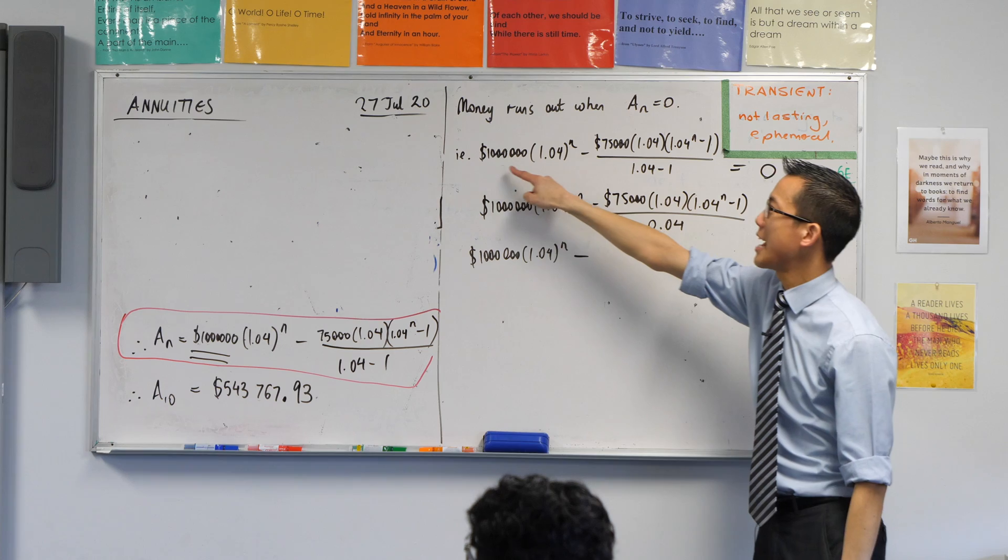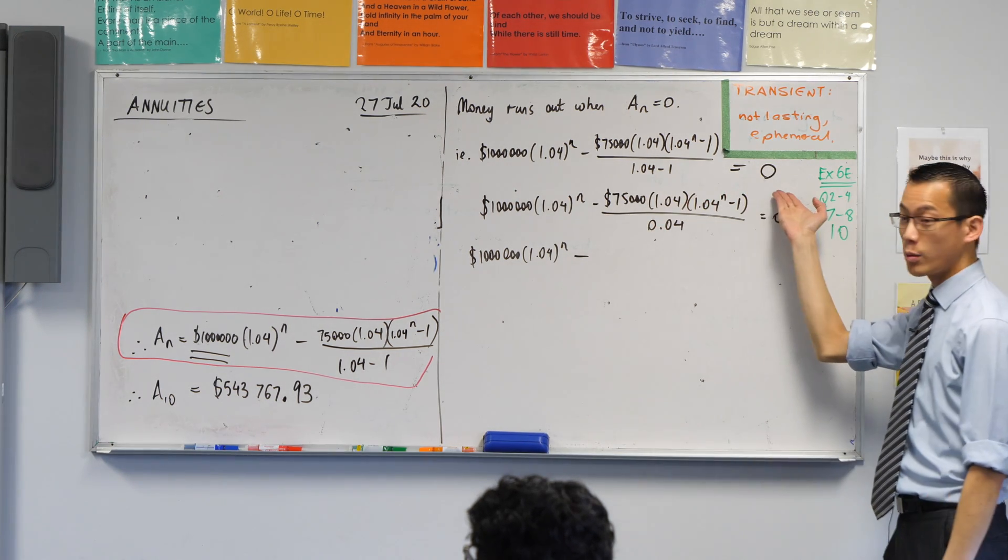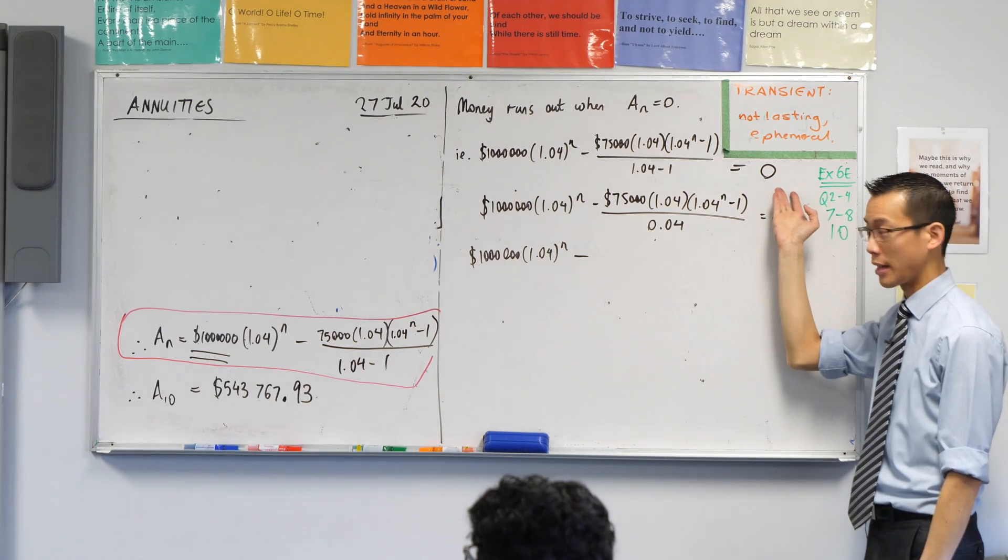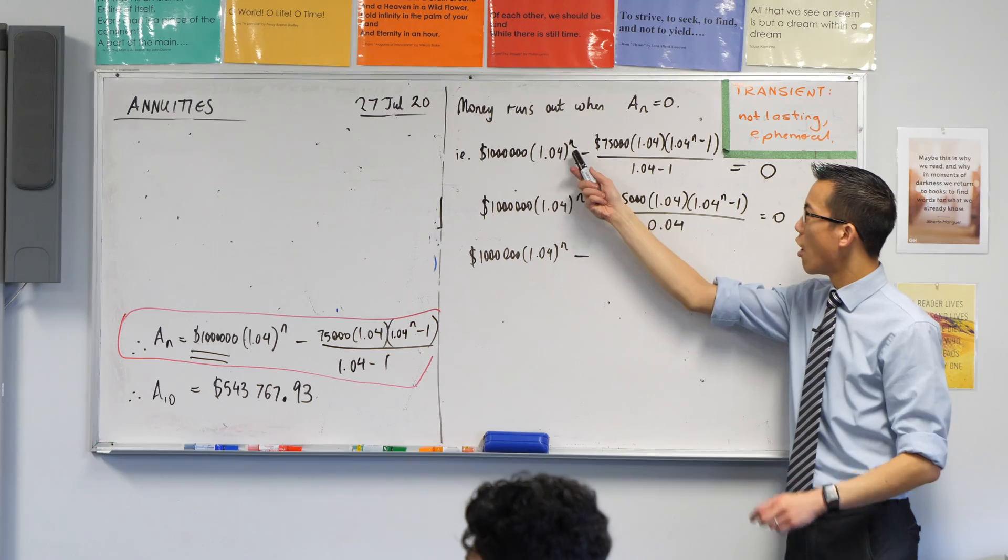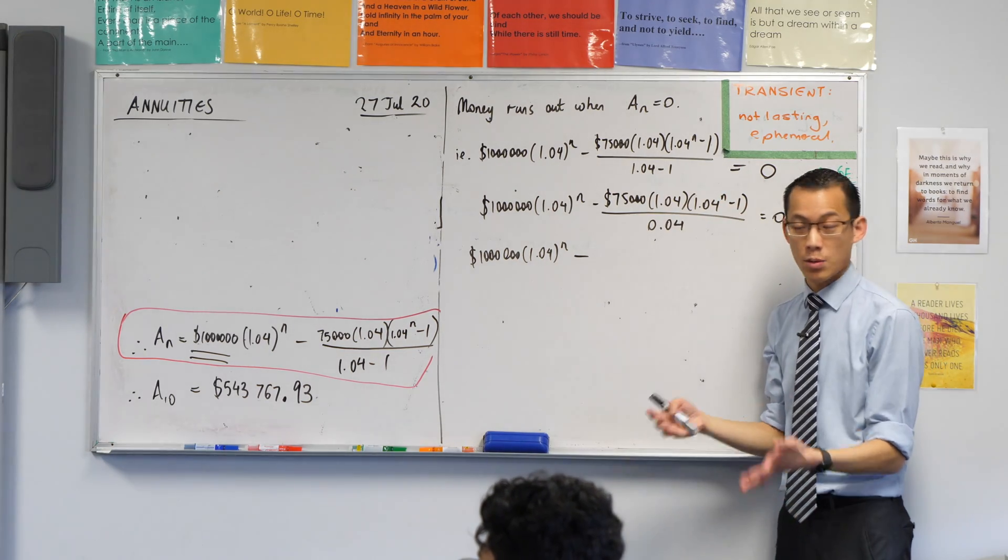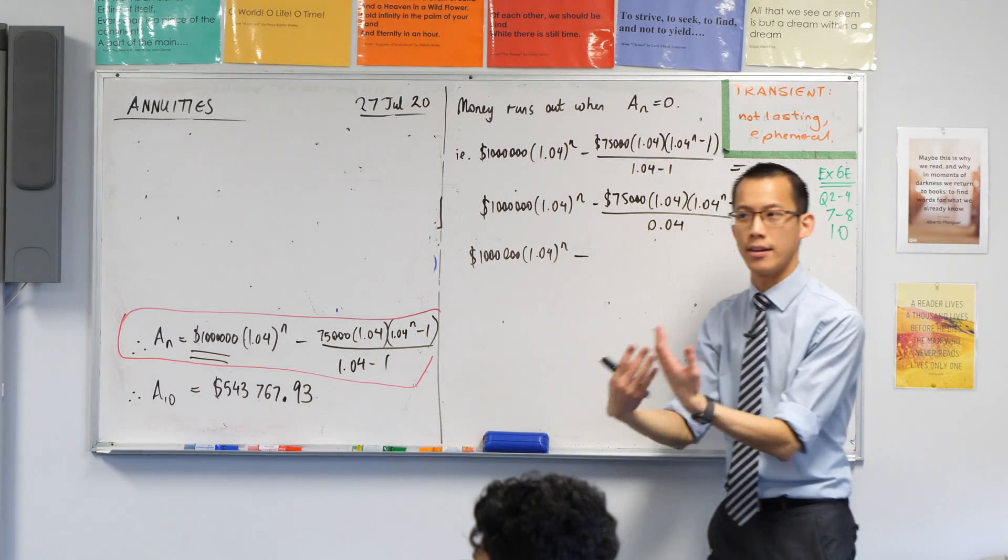So what I'm doing is I'm taking this whole A of n, that's everything in that red box there, and I'm letting it equal zero, and now I'm trying to solve. The way you can know your head in the right direction is, see how the only unknown is n. So when I solve this I'll get n equals something, which is what I'm trying to find out, when this all takes place.